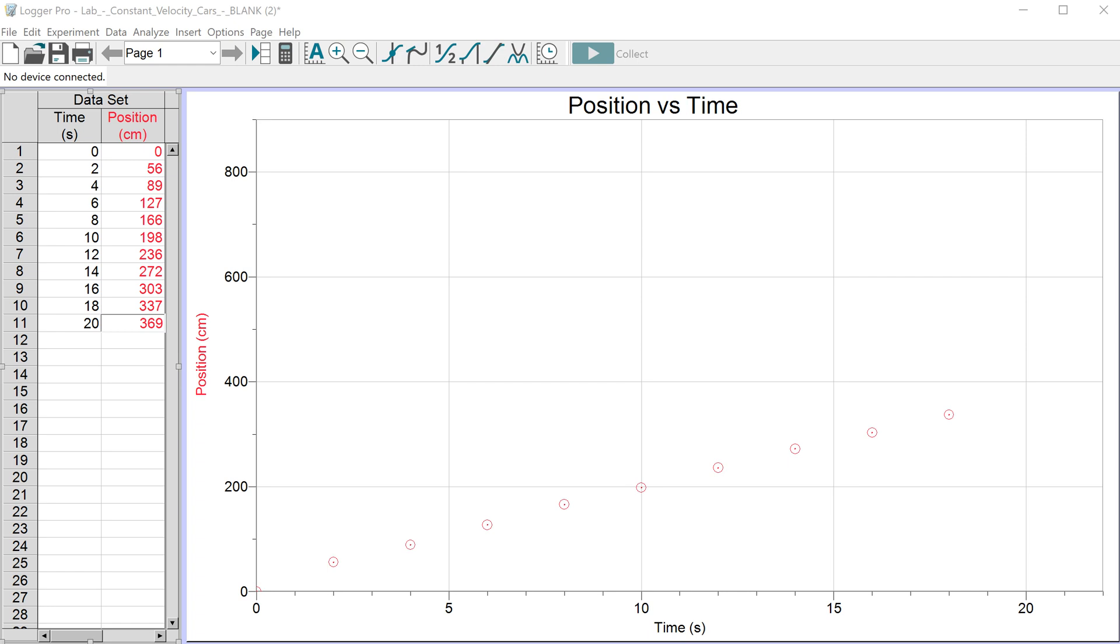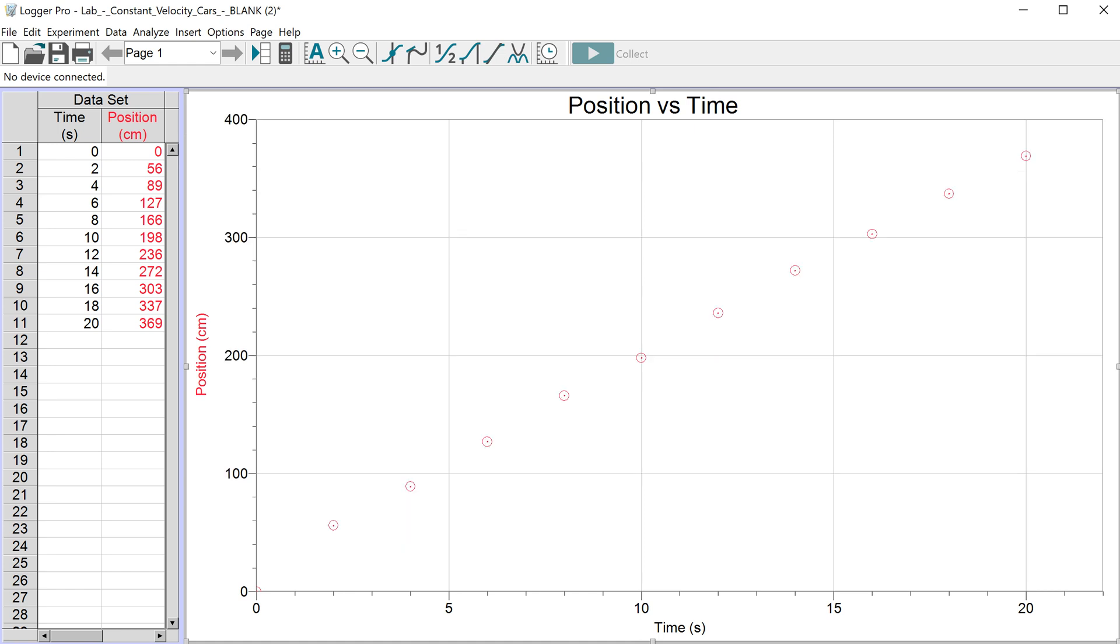Now you should see LoggerPro has put these data points in for you and the first thing that we're going to do is scale this graph a little bit. Mouse over the Y maximum which is 800, and it looks like I don't have a value above 400 so I'm going to put in 400. You just literally put in 400 then enter for my maximum value and the scale has changed.